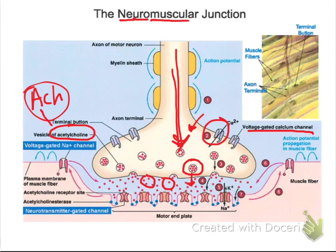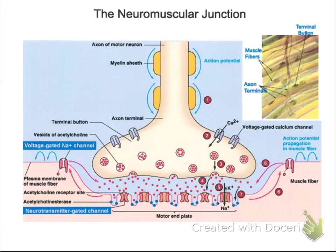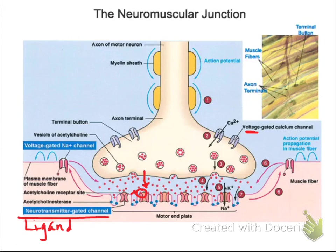Acetylcholine moves down its concentration gradient across the synaptic cleft and binds onto the ligand-gated channels on the motor end plate, which is the area of the skeletal muscle cell that interacts with the nerve cell. So acetylcholine has moved across the synaptic cleft and it binds onto a different type of gate. Up at the nerve cell we had a voltage-gated calcium channel opened by an electrical current change, but down here we have acetylcholine binding to a neurotransmitter-gated channel, also called a ligand-gated channel.